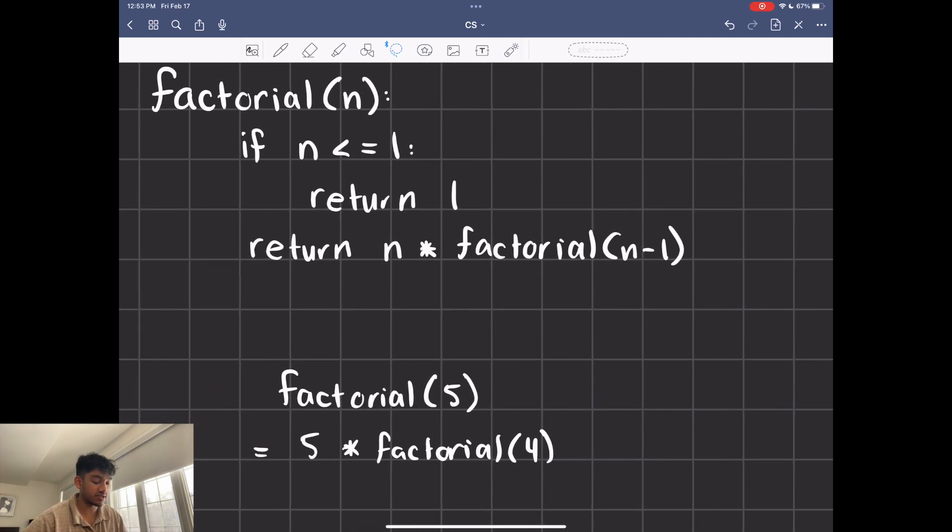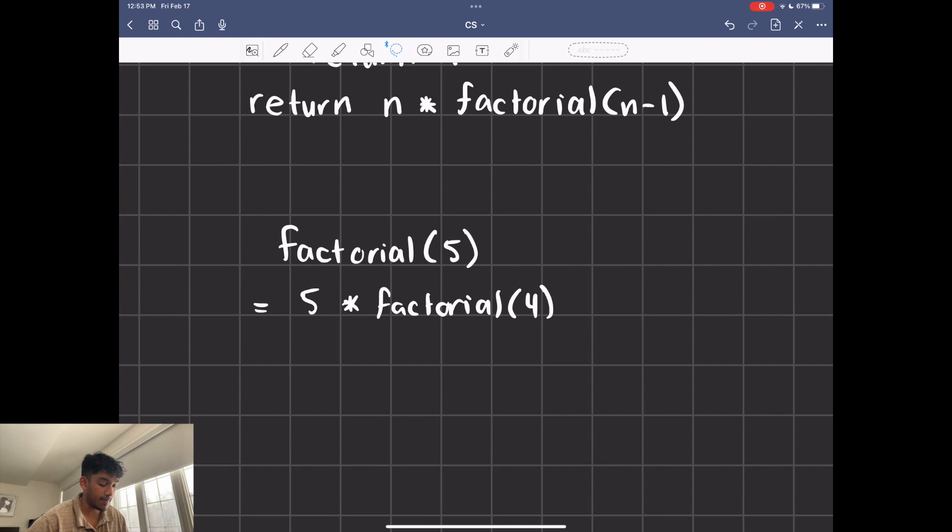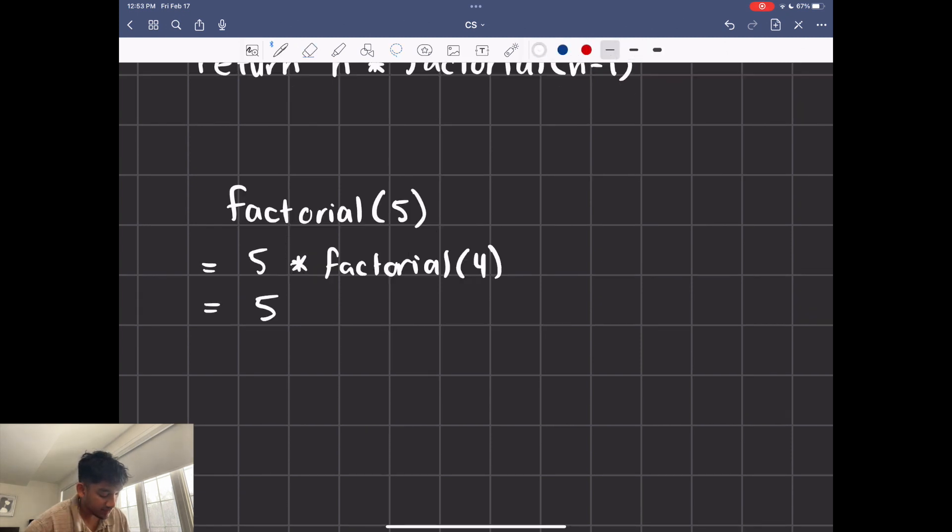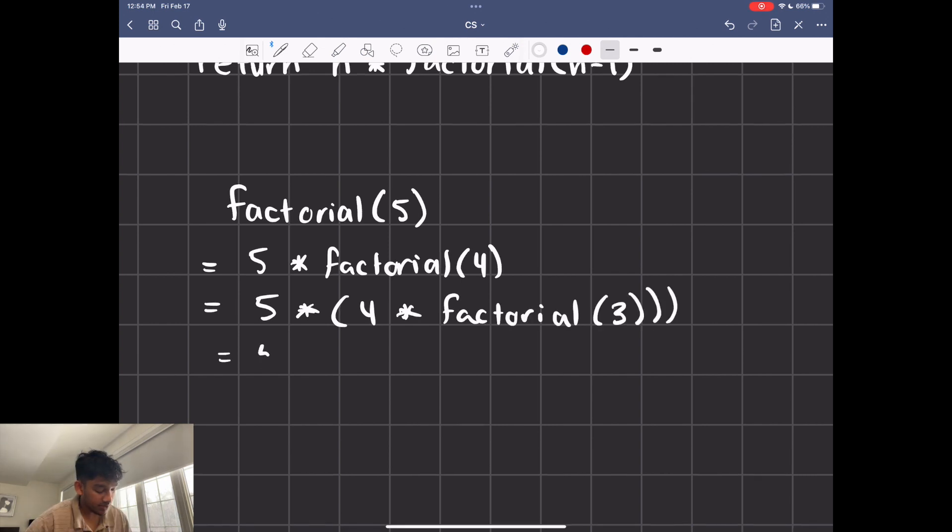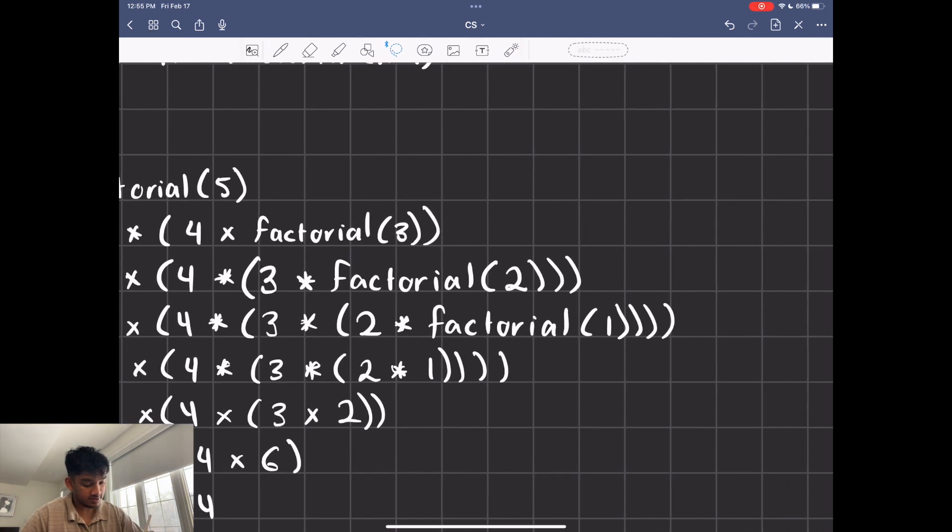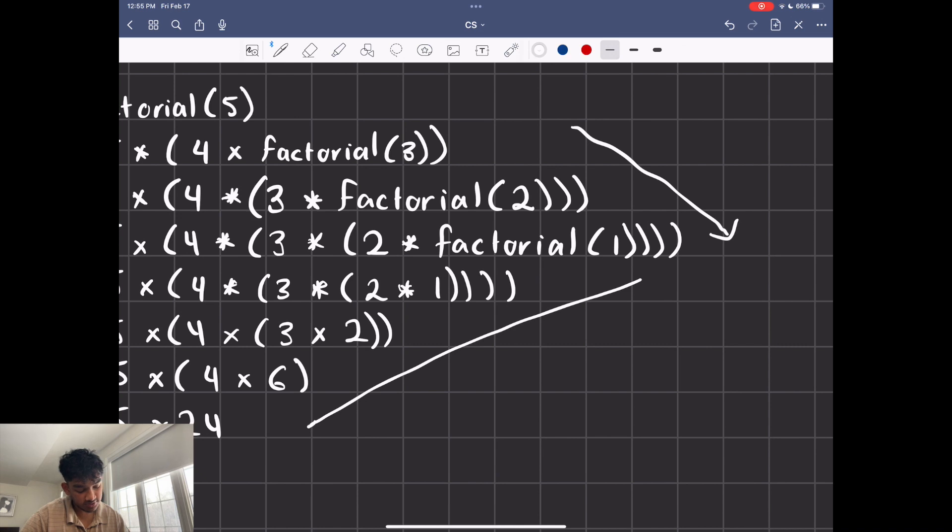From that first function, we know that it's going to be 5 times factorial 4. Then this breaks down to 5 times 4 times factorial 3. And then we're going to have 5 times 4 times 3 times factorial 2. Eventually we get something like this. So you're going to see that all the multiplication actually happens after the last recursive call. So we have to compute again on the way back, which is super annoying.